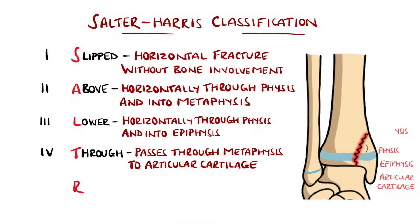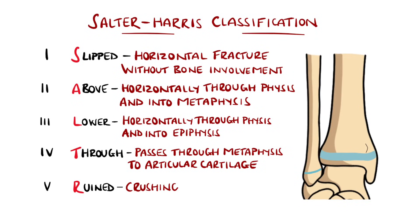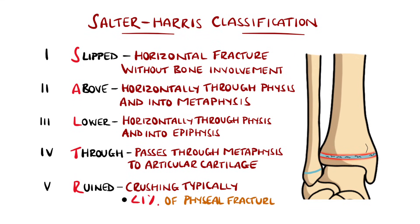In type 5, the growth plate has been damaged without being displaced, for example through crushing. The R in this case stands for ruined. These are very rare, with less than 1% of cases, but do feature the worst prognosis, often being diagnosed in retrospect as a result of growth disturbance or growth arrest.